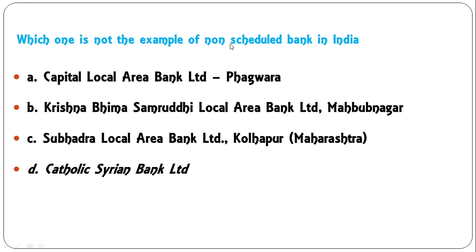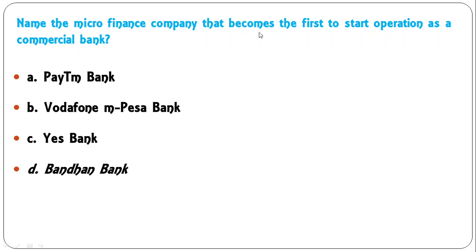Which one is not an example of non-scheduled banks in India? Options: Capital Local Area Bank Limited Fagwara Punjab, Krishna Bhima Samruddhi Local Area Bank Limited Mahbubnagar Andhra Pradesh, Subhadra Local Area Bank Limited Kolhapur Maharashtra, Catholic Syrian Bank Limited. The first three are examples of non-scheduled banks, whereas Catholic Syrian Bank is a scheduled bank. So D is the correct answer.